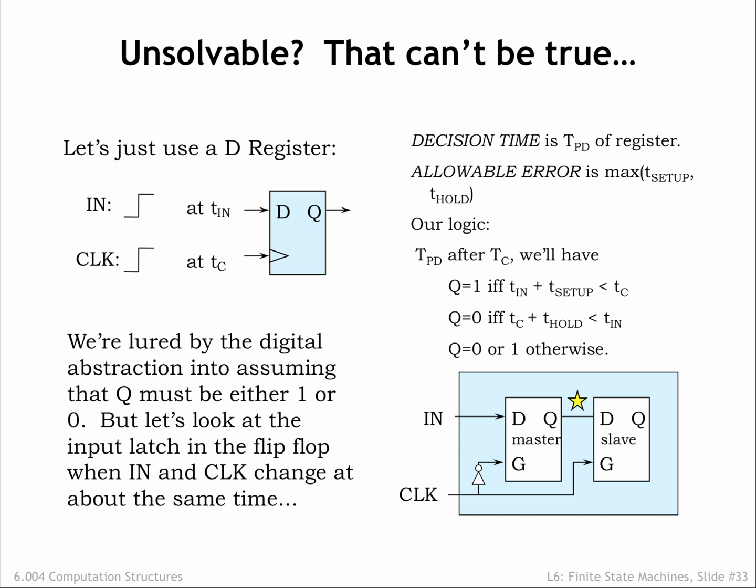Sadly, we're not good to go. We're lured by the digital abstraction into assuming that even if we violate the dynamic discipline, that Q must be either 1 or 0 after the propagation delay. But that isn't a valid assumption, as we'll see when we look more carefully at the operation of the register's master latch when IN and clock change at about the same time.